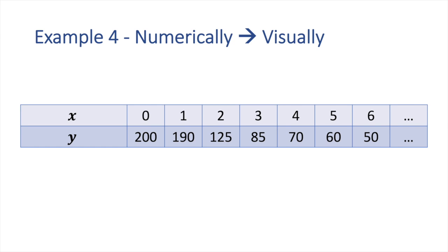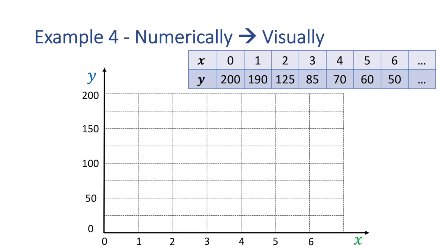Alright, our fourth and final example is going to look at how we can start from a numerical representation of a function, or in other words, a table, and get a visual representation, or in other words, plot a graph of the function. So, first of all, here is an example of a numerical representation of a function, and now let's see how this table can help us plot this graph.